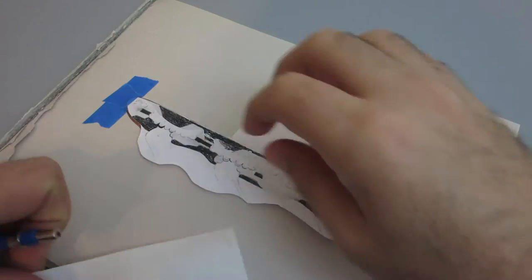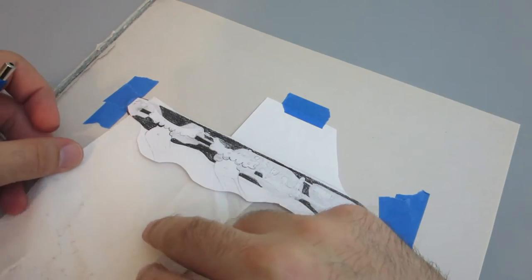Then, using transfer paper, I drew the image onto the plate. The white transfer paper shows up really well on the copper plate.